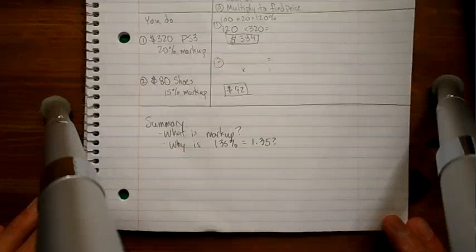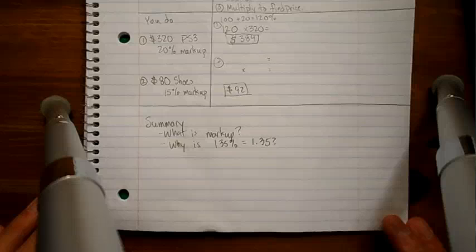All right, so we have the summary and you see it on the screen. And it's asking, what is a markup? So you really just need to write down in your summary what a markup is. If you have to rewind the video, do that. Why is 135% equal to 1.35? Again, what's the method? How did you get there? How do you know? Also, what I didn't write is I really want you to show me what the steps are and remember what the steps are for finding a markup or interest added to an original price.